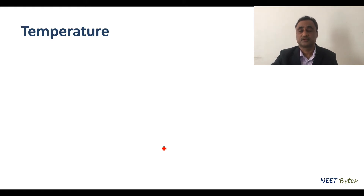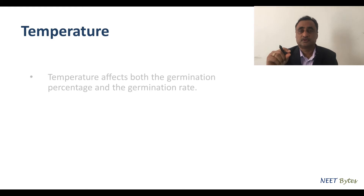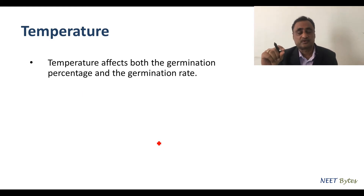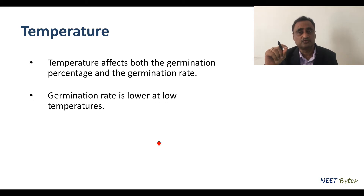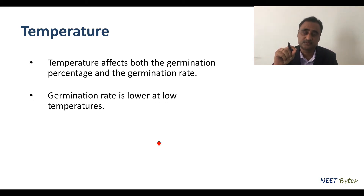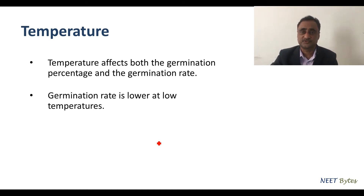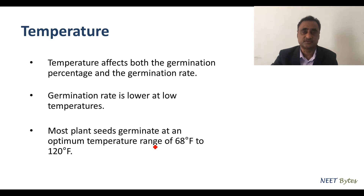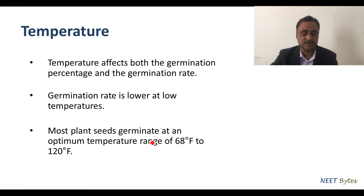Next, temperature. The optimum temperature is required for germination. Temperature affects both the germination percentage and the germination rate. The rate of germination is low at lower temperatures, and as the temperature increases, germination increases — but only up to the optimum temperature. Usually, the optimum temperature lies between 68 degrees Fahrenheit and 120 degrees Fahrenheit.